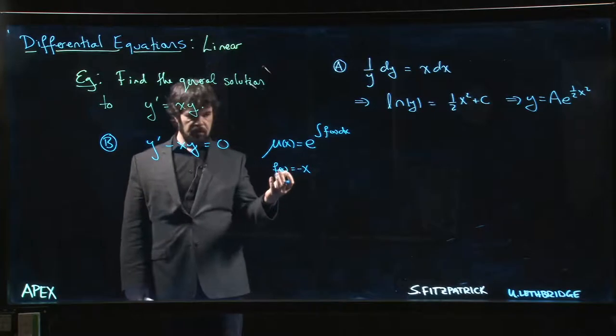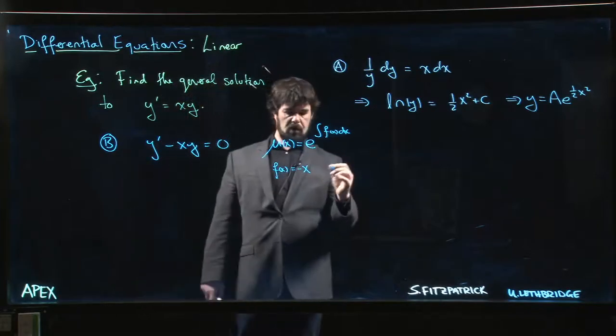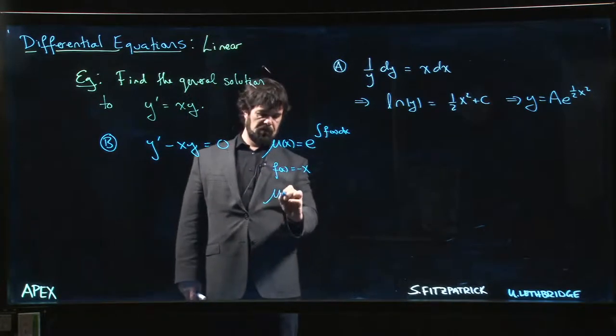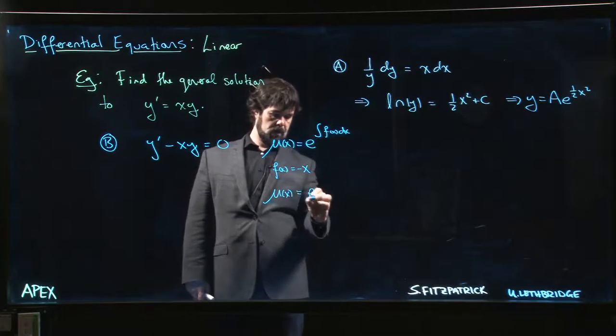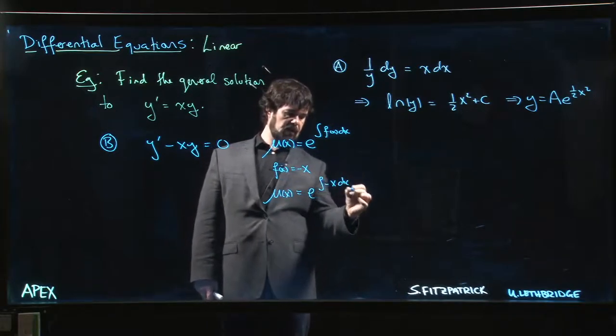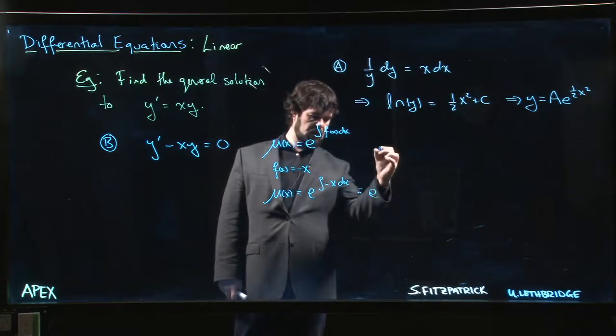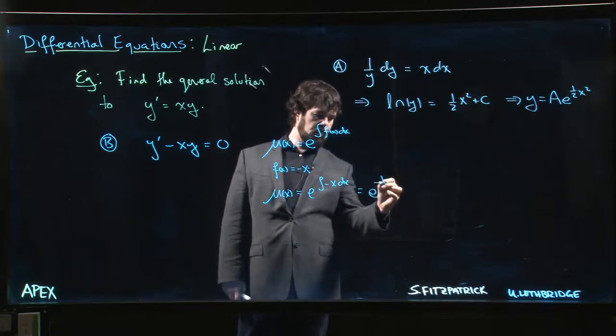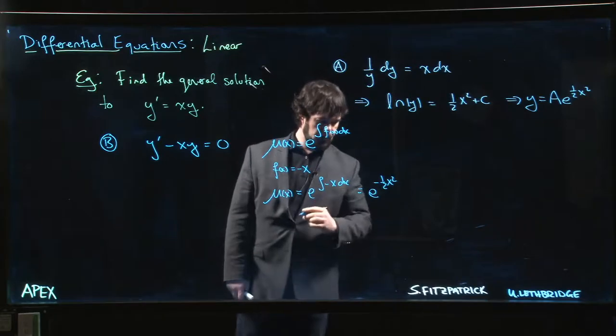So the integrating factor becomes e to the integral of minus x dx, which is e to the minus 1 half x squared. You might notice maybe some connections going on there.